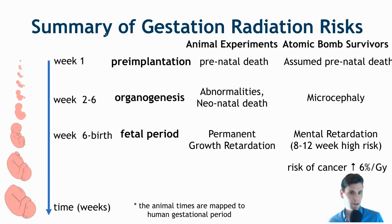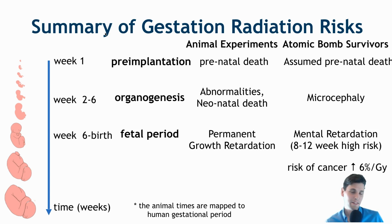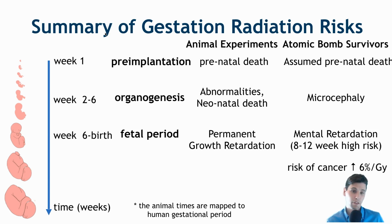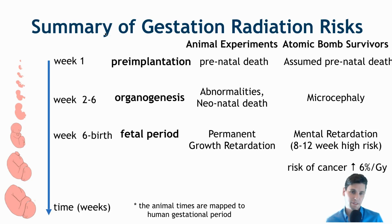To summarize in a table: in the first week pre-implantation, animal experiments demonstrated prenatal death, and in atomic bomb survivors prenatal death is assumed since the individual likely never would have known an embryo had not yet implanted. During organogenesis, animal experiments showed neonatal death and abnormalities, and microcephaly was demonstrated in atomic bomb survivors. During the fetal period, growth retardation was seen in animal experiments and mental retardation in atomic bomb survivors, along with that increased risk of cancer estimated at about 6% per gray.